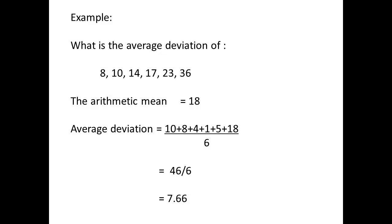Now we have the arithmetic mean, we can find the average deviation. For 8, the deviation is 18 minus 8, which is 10. For the next number 10, it is 18 minus 10, which is 8, and so on. So we have 10 plus 8 plus 4 plus 1 plus 5 plus 18, divided by 6, which gives us an answer of 7.66.